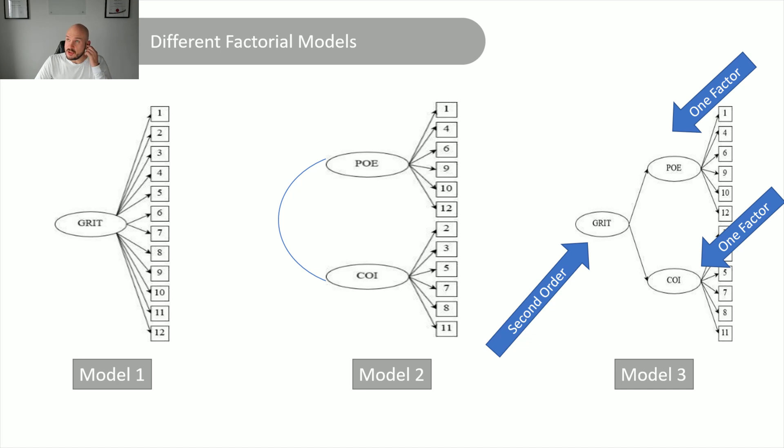And if you have issues with convergence, what do you do? The first thing is, we take the one here away. So in other words, we let it estimate freely. And we take that one, and we put it on grit.